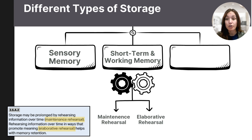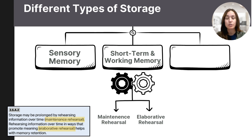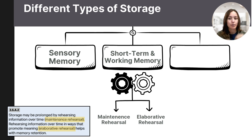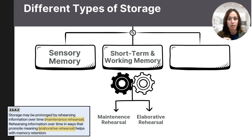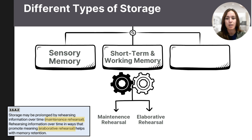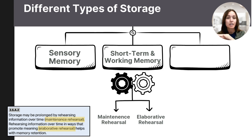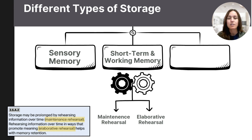To hold information longer in our minds, we can rehearse it or repeat it. Maintenance rehearsal and elaborative rehearsal are two different types of strategies we can use. Maintenance rehearsal is the process of repeatedly verbalizing or thinking about information to keep it in our short-term memory — like repeating a phone number over and over until you dial it. However, this method is usually not very effective in getting information into long-term retention because it doesn't involve deeper processing. It's a shallow processing method.